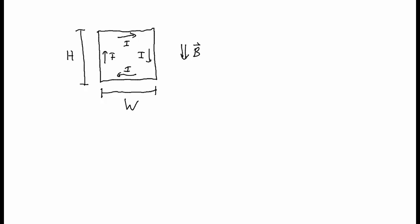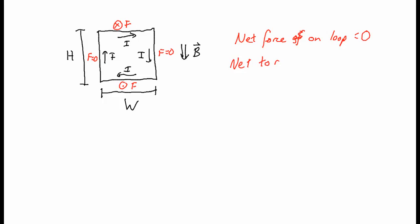Let's see what are the forces on these wires. If I look at the top wire, I get I cross B — right cross down — that is, into the page. If I look at the right wire, I get down cross down, that's no force at all. On the left, no force at all. And on the bottom, the force points outward. We see that the net force on the loop is equal to zero, but there will be a net torque — the loop is going to spin.